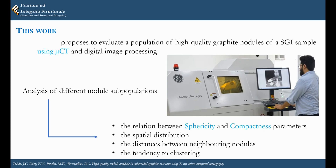In this work, a population of high-quality graphite nodules of an HGA sample was evaluated by using MicroCT and digital image processing. The analysis involved the evaluation of different parameters such as ferricity, compactness, spatial distribution, among others.